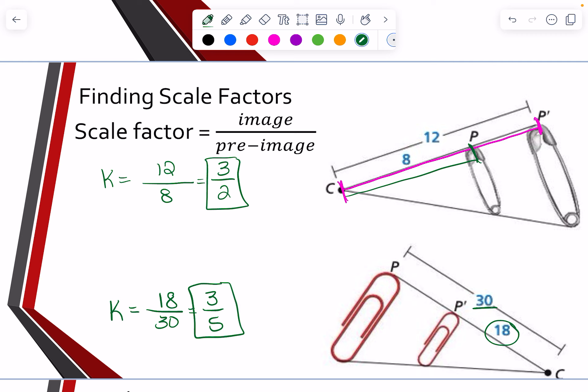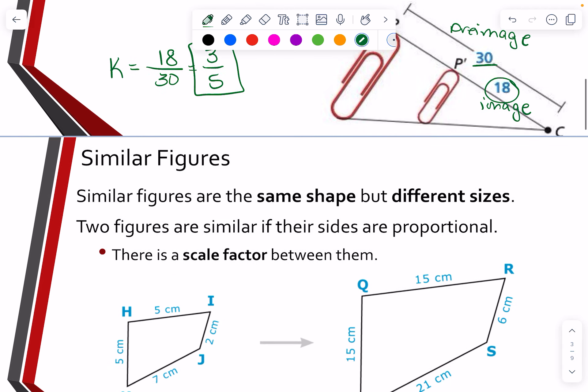I know that value has to be less than one, because if you look, your pre-image is larger than your image. So it shrunk, it reduced. So that tells me that value has to be less than one.